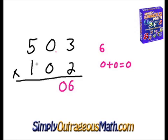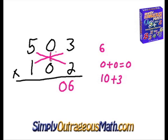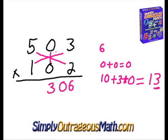For the next step, we multiply five times two, which is ten. One times three is three. Zero times zero is plus zero. So we have thirteen here. We're going to use the three as our digit, and carry the one up here for our next step.